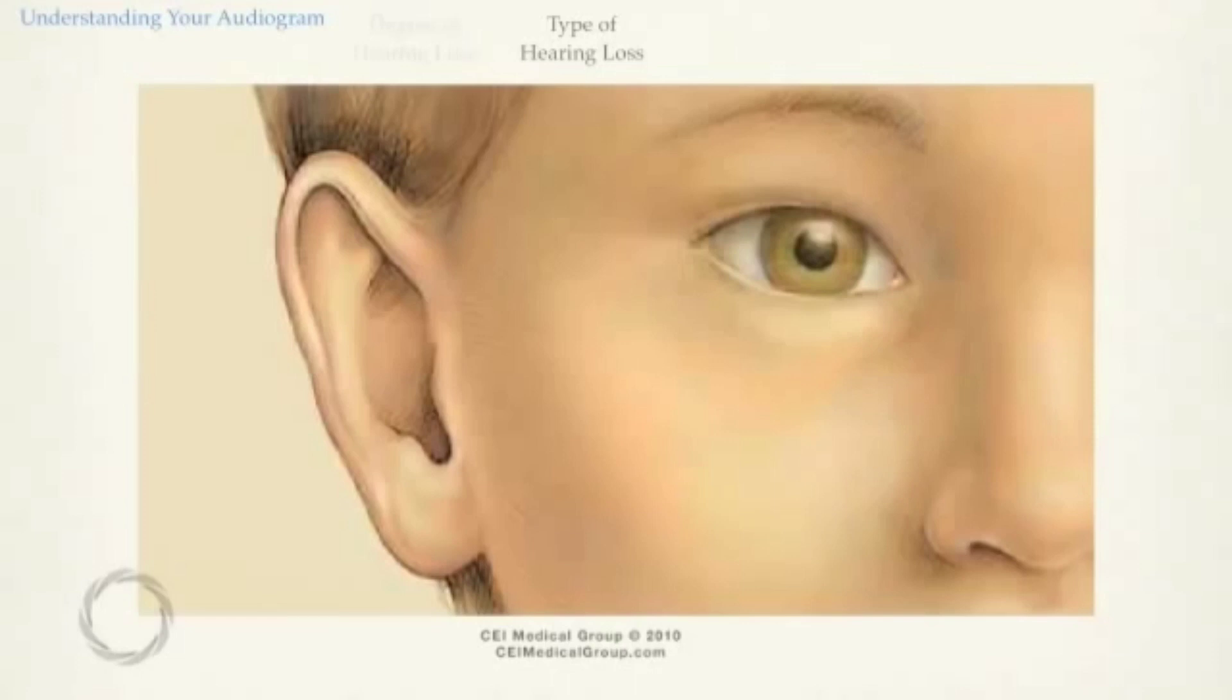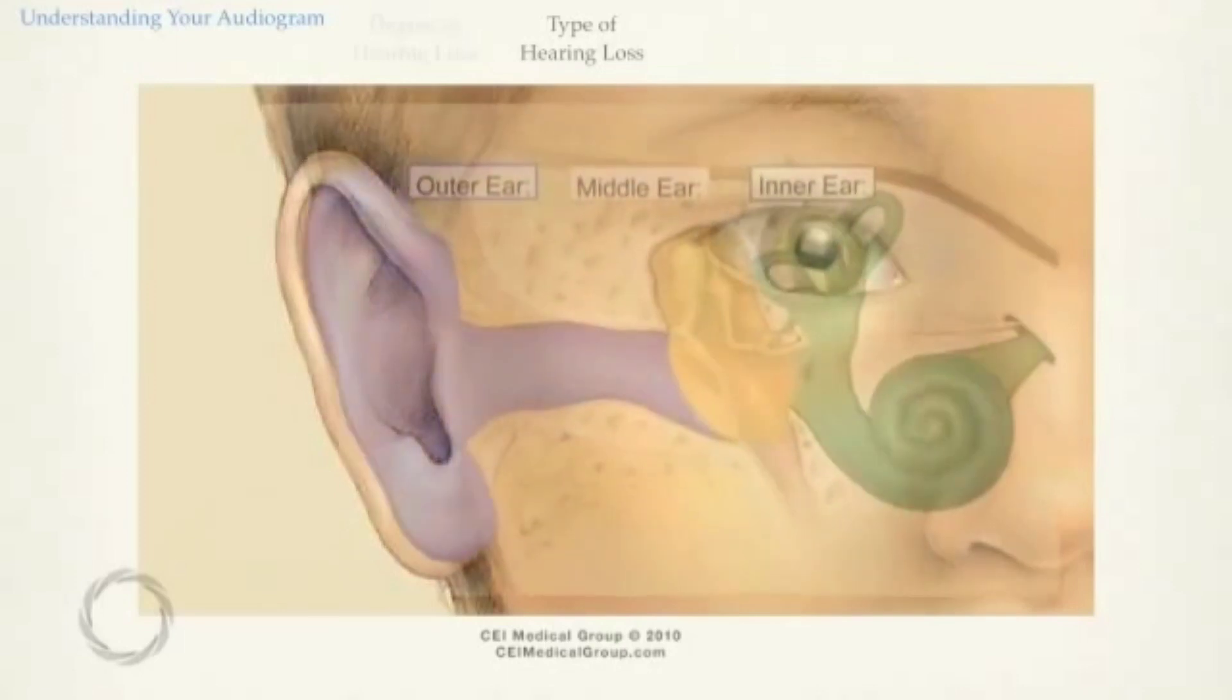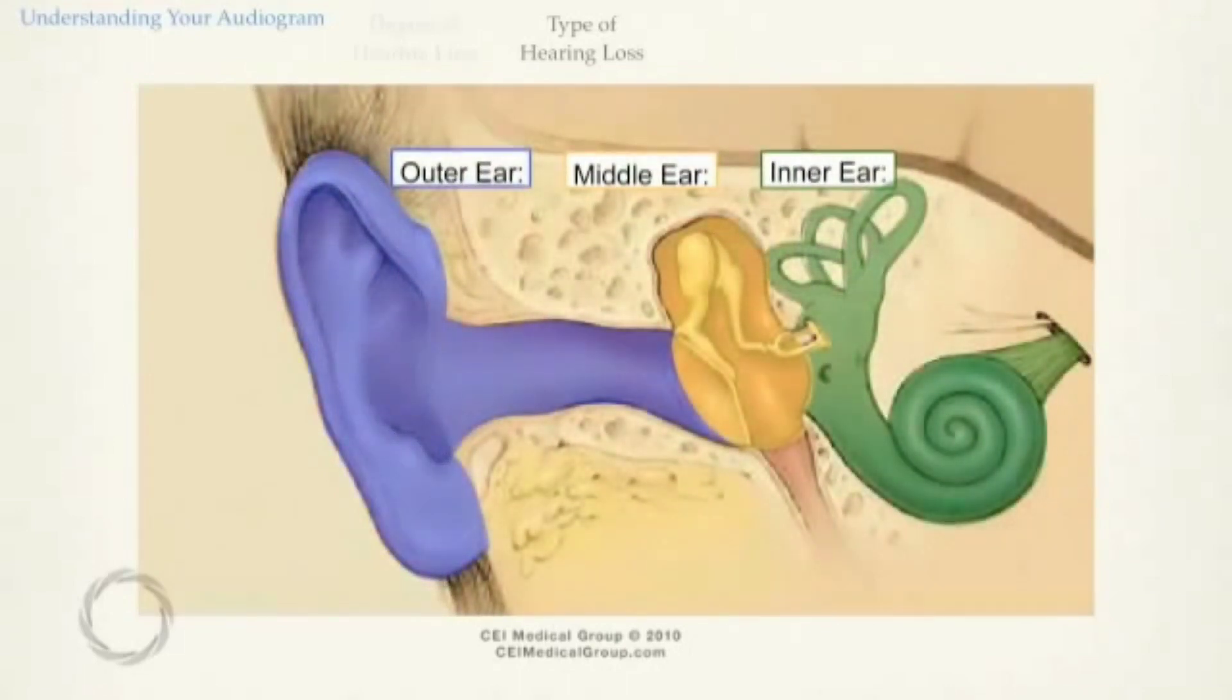To understand the different types of hearing loss, let's first cover the basic anatomy of the hearing system. There are three parts to the ear: the outer, the middle, and the inner ear.